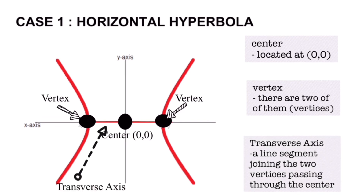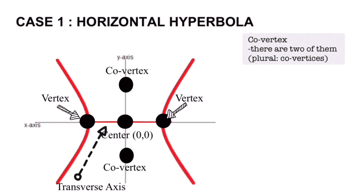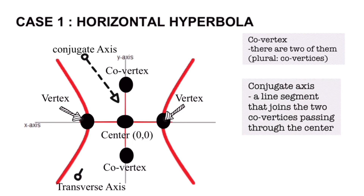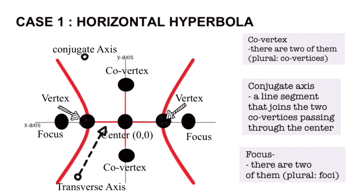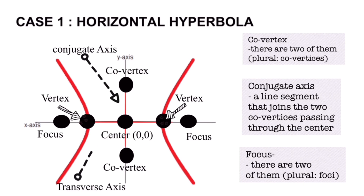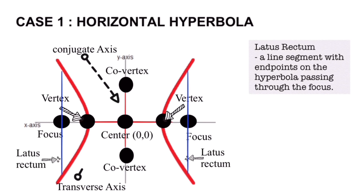Another part is the transverse axis, which is the line that connects the two vertices passing through the center. Another part is the co-vertex — there are two of them, called co-vertices. Another part is the conjugate axis, which is the line connecting the two co-vertices passing through the center. The next part is the focus — there are two of them, called foci. The focus is located to the side where the branch of the hyperbola opens. Another part is the latus rectum, which is the line segment with endpoints on the hyperbola that passes through the focus, and there are two of them for each side.